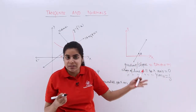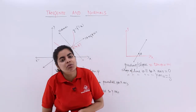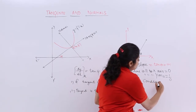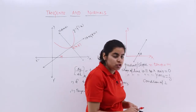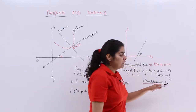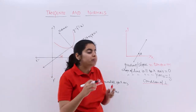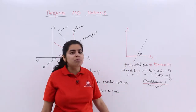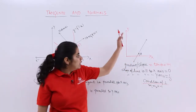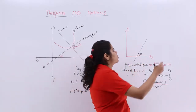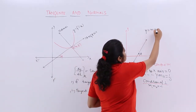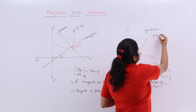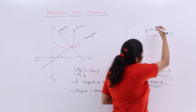These are the things you have studied earlier which will help you understand tangents and normals. You also studied the condition of perpendicularity: if two lines have slopes m1 and m2, then they are perpendicular to each other when m1 multiplied by m2 equals minus 1. This is very important and we are going to use it in tangents and normals. You also know the equation of a line can be y = mx + c, or using two points: y − y1 = m(x − x1).